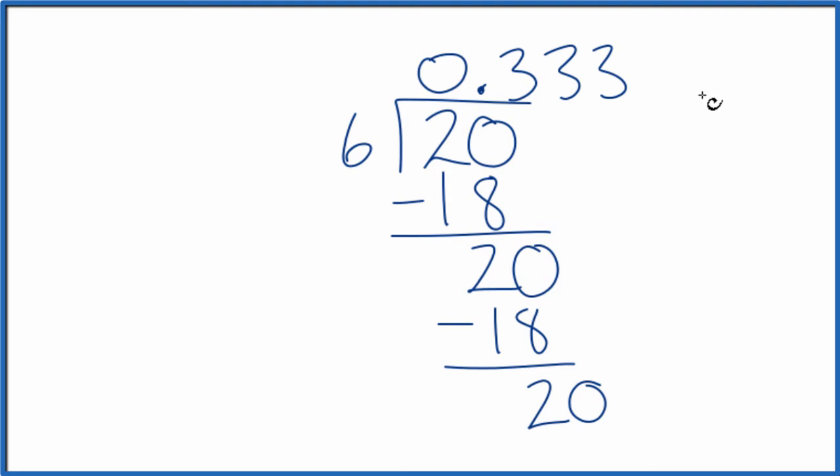they just keep going. So that's why when we divide 2 by 6 here, we put 0.3, and we put the bar here to show the 3's repeat. So that's how you convert the fraction 2 over 6 to a decimal.